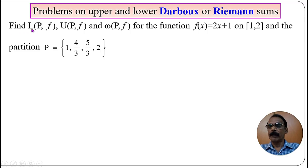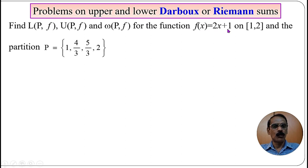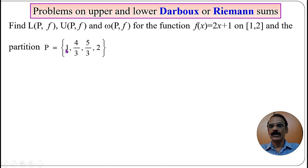Find the lower Riemann sum, upper Riemann sum, and oscillatory Riemann sum for the function f(x) = 2x + 1 on the closed interval [1, 2], where the partition P is equal to the set containing the points 1, 4/3, 5/3, 2.